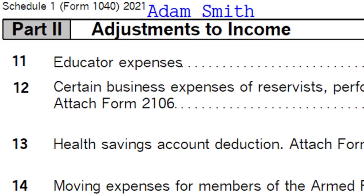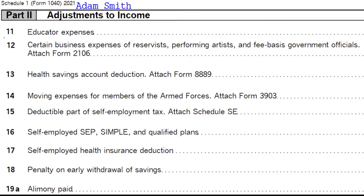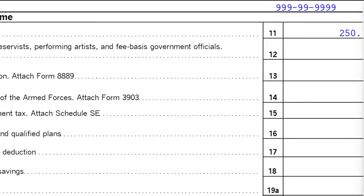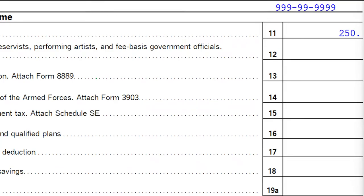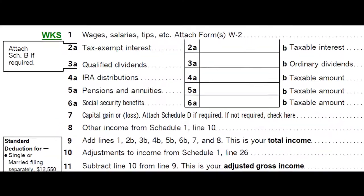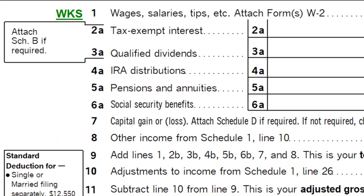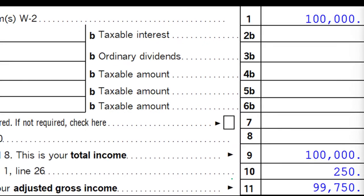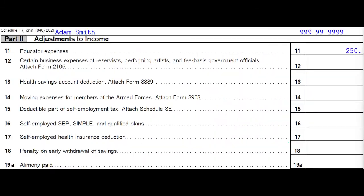Here's Schedule One, Part II. We're focused on line 11 — educator expenses — at the $250 cap. The total from Schedule One Part II flows back up to Form 1040 page one and into line 10.